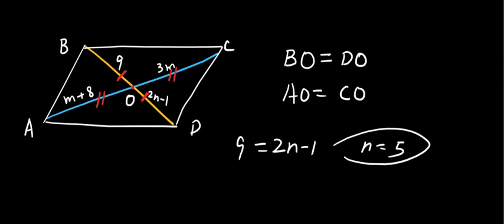So, same concept, same property. Next one, we're going to set up AO equals CO. Therefore, we say M plus 8 equals 3M. Go ahead and solve for M. What do you have for M? Let's pause and wait. Do you have M equals 4?